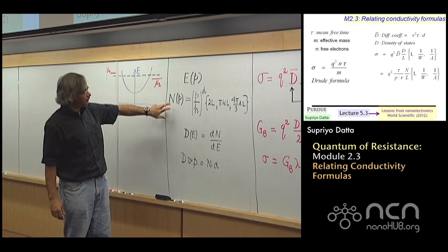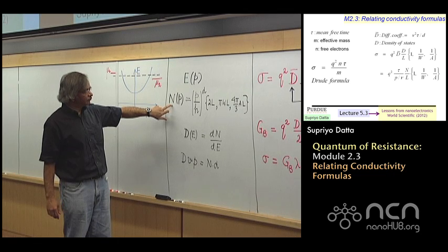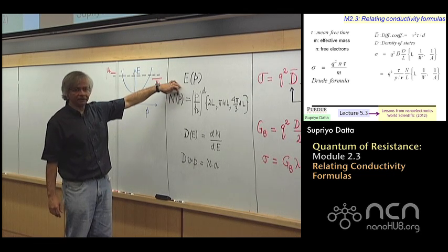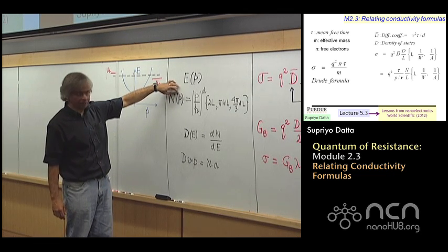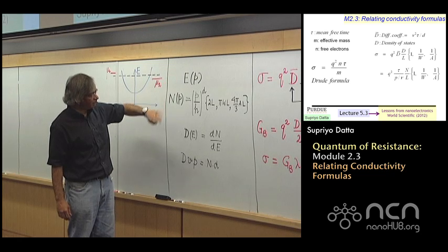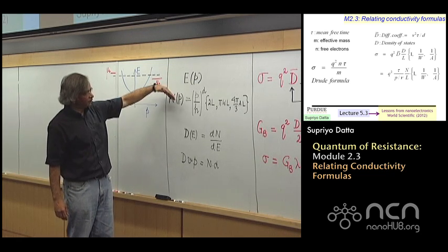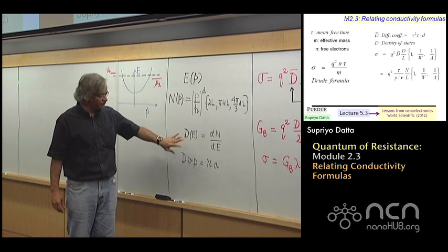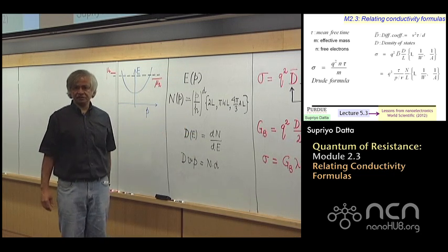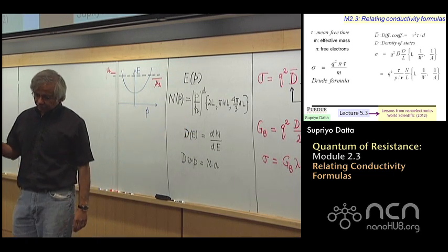And that gives you the number of states available up to a given momentum p, that is this n of p. And these two can be combined to obtain the number of states up to a given energy whose derivative then is the density of states.